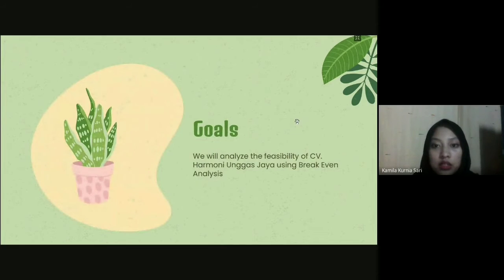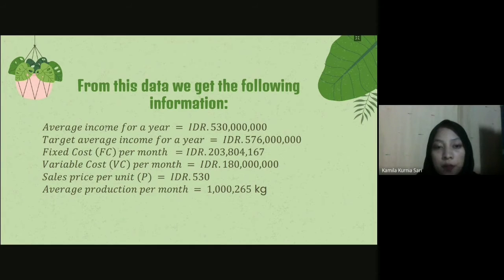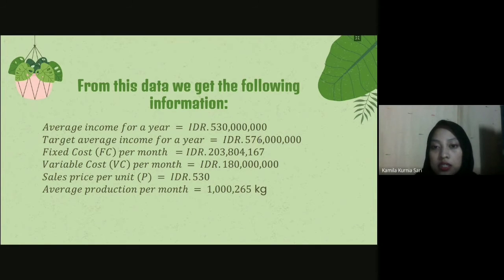Our goal is to analyze the feasibility of CV Harmony Unggas Jaya's business using break-even analysis. From the three tables, we obtain the following key information: the average income for a year is 530 million rupiah, the target average income for a year is 576 million rupiah, fixed cost per month, variable cost per month, sales price per unit, and average production per month. These values will be used in the break-even analysis.